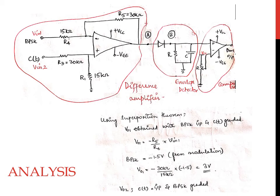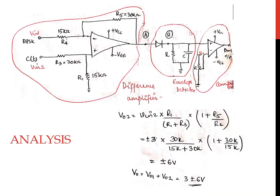Now analyzing with input Vin2 applied and the BPSK signal grounded to obtain Vout2. In this case, the circuit appears as a non-inverting amplifier with resistances R3 and R1 forming a potential divider network, while resistances R5 and R4 provide the gain of the non-inverting amplifier. The input to the circuit is C(t) which is plus or minus 3 volts, giving Vout2 equal to plus or minus 6 volts. The output voltage of the difference amplifier is Vout1 plus Vout2, which equals 3 plus or minus 6 volts.